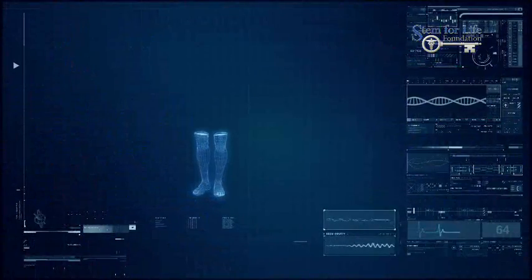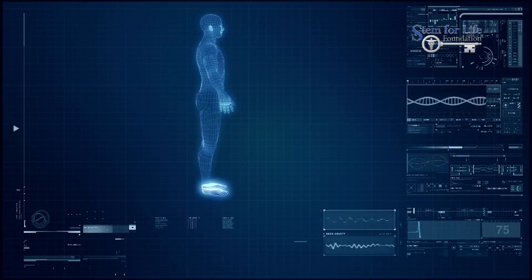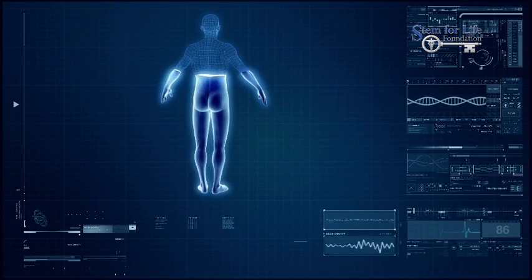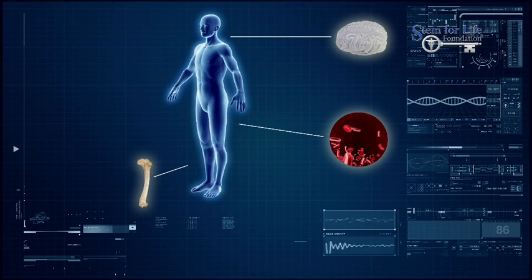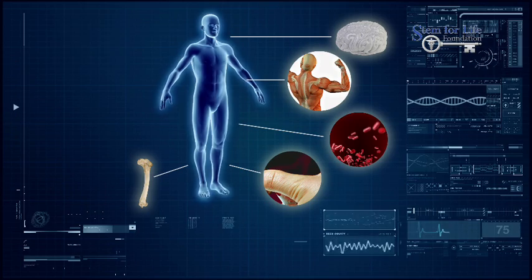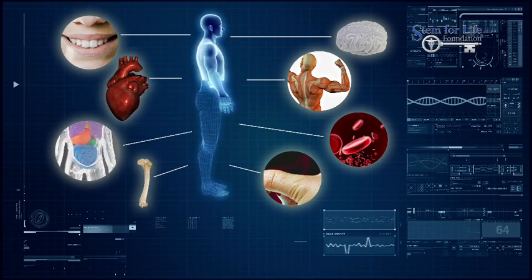These adult stem cells are found in children as well as adults. They can be found in many tissues and organs, including brain, bone marrow, blood, blood vessels, muscle, skin, teeth, heart, gut, and liver, among others.